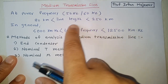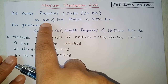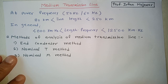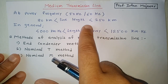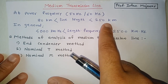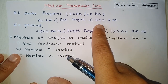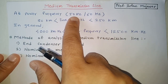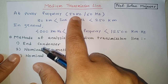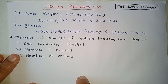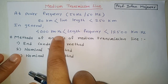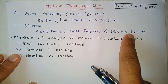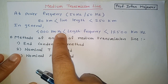At power frequency (50 Hz or 60 Hz), if the line length is greater than 80 km and less than 250 km, it is classified as a medium transmission line. In some cases, 250 km is taken as 300 km, but roughly we take line length less than 250 km and greater than 80 km.